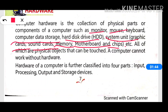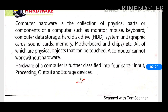Normally when we use a computer we can see the monitor, mouse, keyboard, and some internal devices. These are physical parts which we can see. From hardware we move on to input devices.